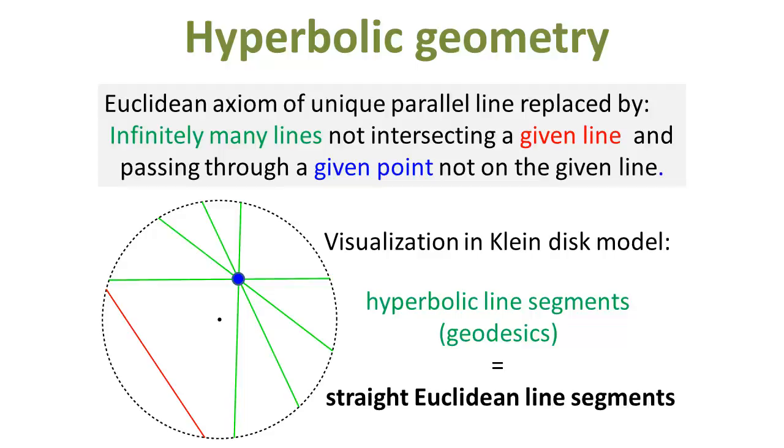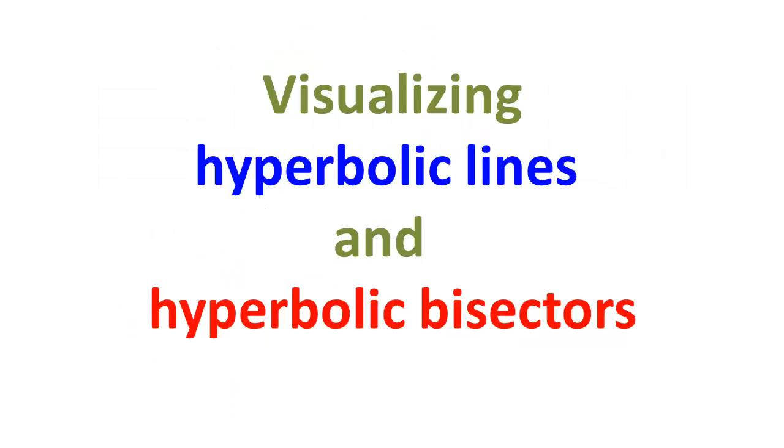Several models satisfying the axioms of hyperbolic geometry have been built within Euclidean geometry. In Klein model, the hyperbolic lines are straight Euclidean line segments clipped to the unit disk. Let us show the line segment passing through the two points and its Voronoi bisector in the hyperbolic plane.